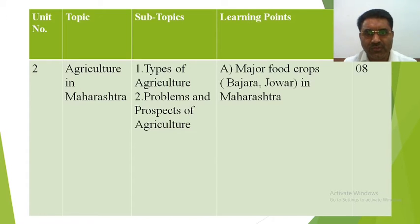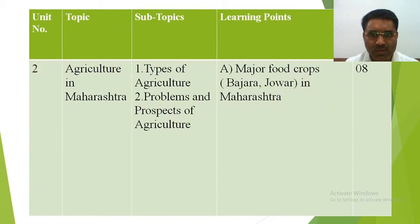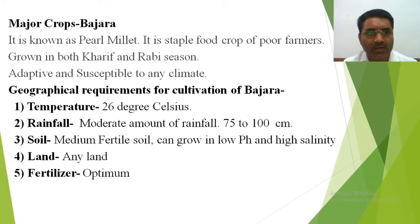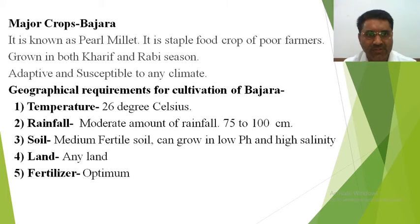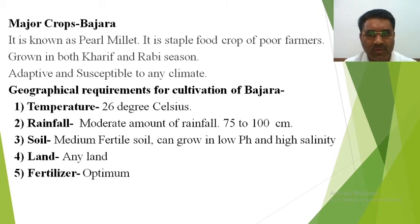We will discuss bajra and jowar crops, which are grown in many important areas of Maharashtra. Bajra is the main crop, particularly preferred in rural areas as a food grain in the diet. It is known as pearl millet and is a staple food crop of poor farmers, who cannot afford high-priced crops. Bajra is grown in both kharif and rabi seasons.